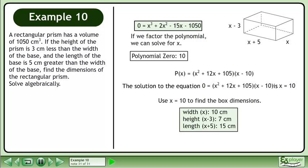Use x equals 10 to find the box dimensions. The width, x, is 10 centimeters. The height, x minus 3, is 7 centimeters. The length, x plus 5, is 15 centimeters.